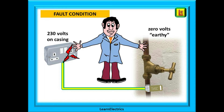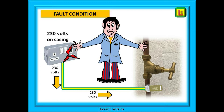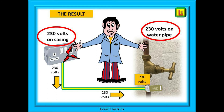If we had a bonding cable between the socket and the water pipe, things can be a lot different. The same fault as before — the socket casing becomes live whilst Eric is plugging in his radio. The 230 volts travels along the bonding cable and appears at the water pipe, making the water pipe 230 volts as well. So what have we got? One hand on the socket casing at 230 volts, the other hand on the water pipe also at 230 volts. A little arithmetic: 230 minus 230 equals zero volts. There is therefore no voltage difference across Eric's body. Ohm's law tells us that if there is no voltage difference then there cannot be any current flowing.